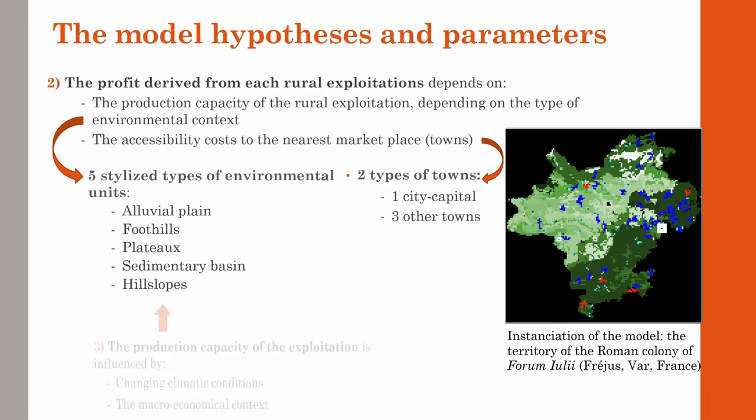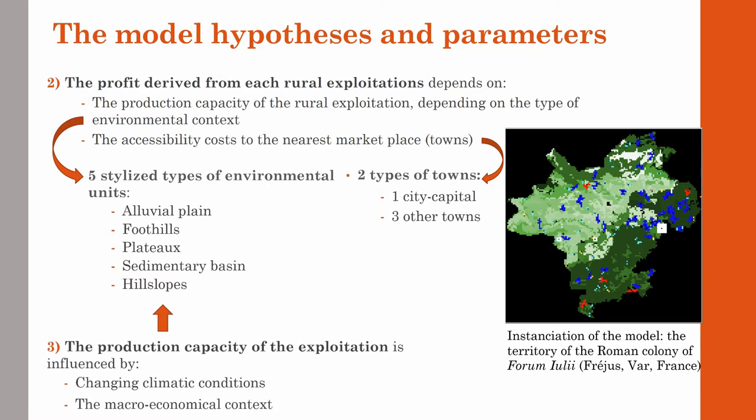The model also aims to integrate the impact of two external factors on the production capacity of the rural exploitations. The first one is climate, whose evolution has an impact on land fertility. For the moment, this impact is simulated in a very rough manner by randomly increasing or decreasing the landscape unit's fertility, but in the future we plan to combine the ABM with a paleoclimatic model.